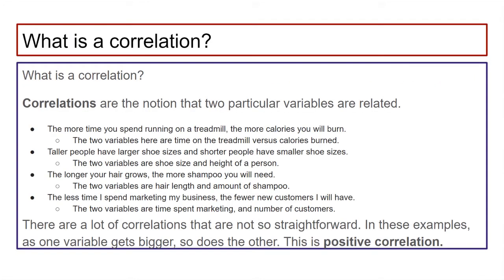What is a correlation? Correlations are the notion that two particular variables are related. For example, the more time you spend running on a treadmill, the more calories you'll burn. Or taller people have larger shoe sizes and shorter people have smaller shoe sizes. You might run into somebody who is tall that has small feet, that's due to individual variation, but overall there is a strong regularity, a strong correlation between things like shoe sizes and how tall you are.